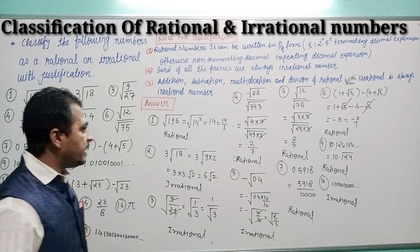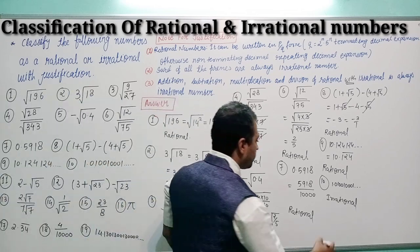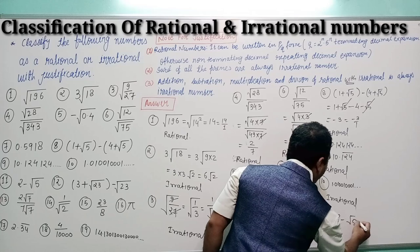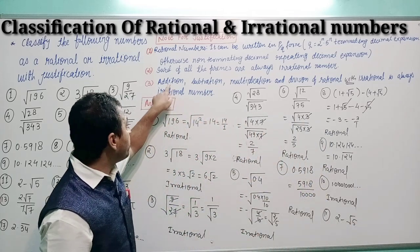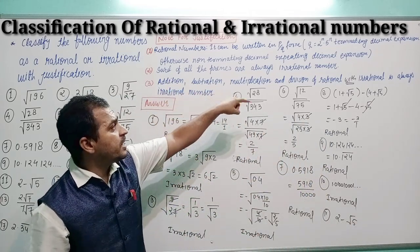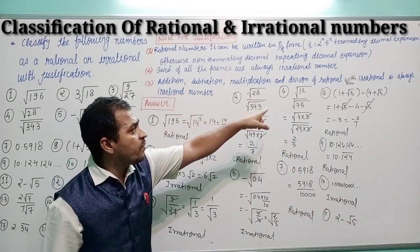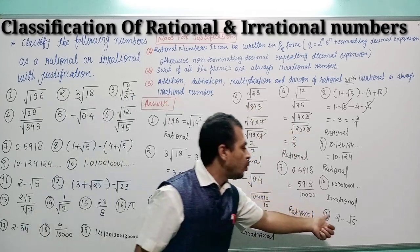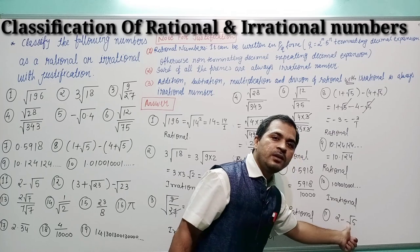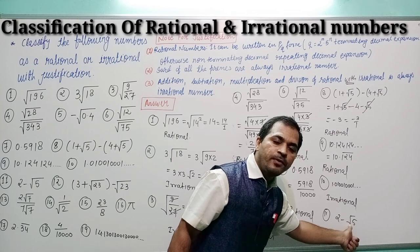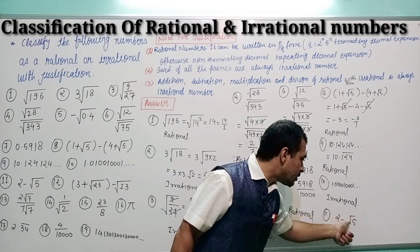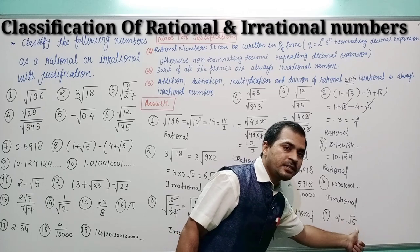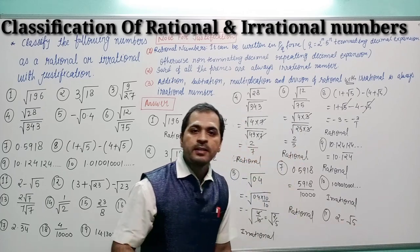Question number 11: 2 − √5. As per point number 3, subtraction of a rational number with an irrational number is always irrational. Here 2 is rational, but 5 is a prime number so √5 is irrational. Therefore rational minus irrational is always irrational.